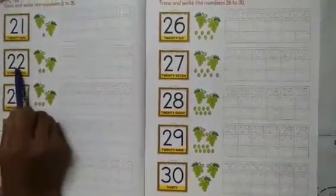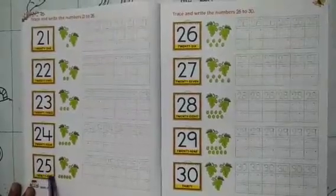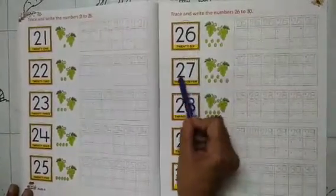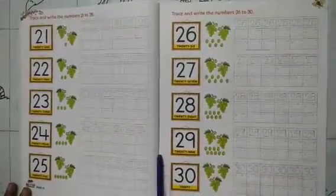21, 21, 21, 22, 22, 23, 23, 24, 25, 25, 26, 26, 27, 27, 27, 28, 28, 29, 29, 30, 30.